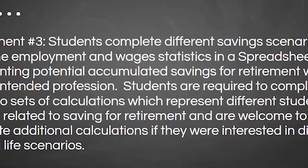Component three is all the calculations. They're using all the information they found based on employment statistics and retirement lifestyle and applying it to a scenario: what could I save over my working life if I set my mind to it? They're provided with a Google spreadsheet template where they do different scenarios — if I save maybe 10 percent of my income every month versus 15 percent over time, how might that look? Would that last me for retirement?